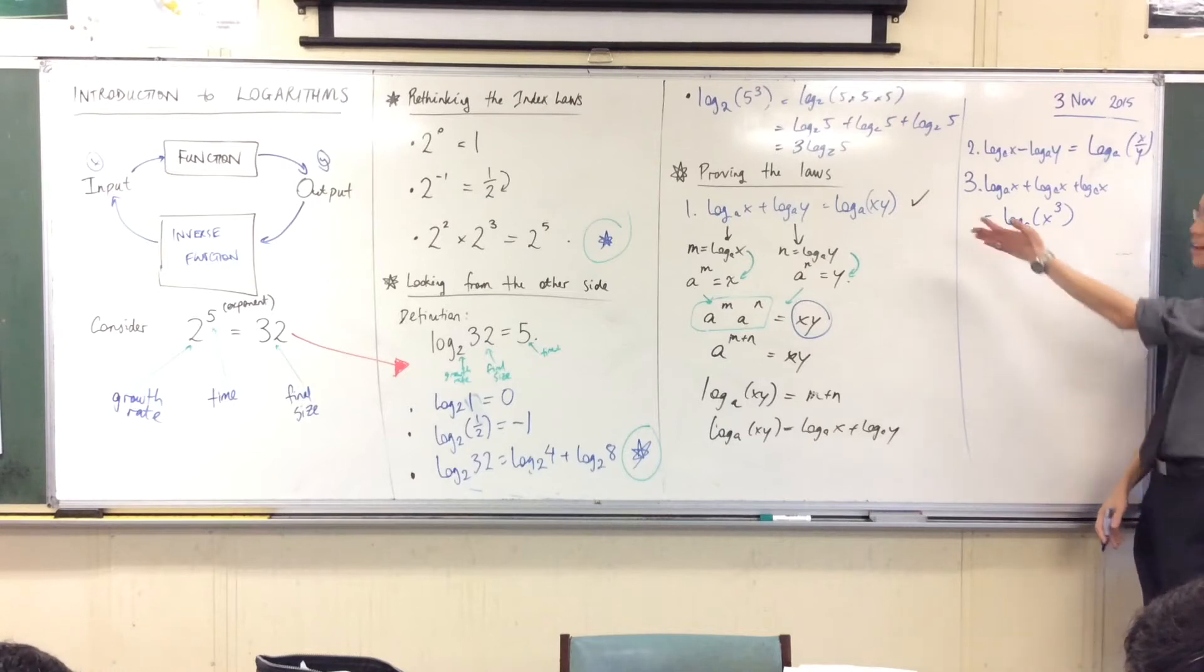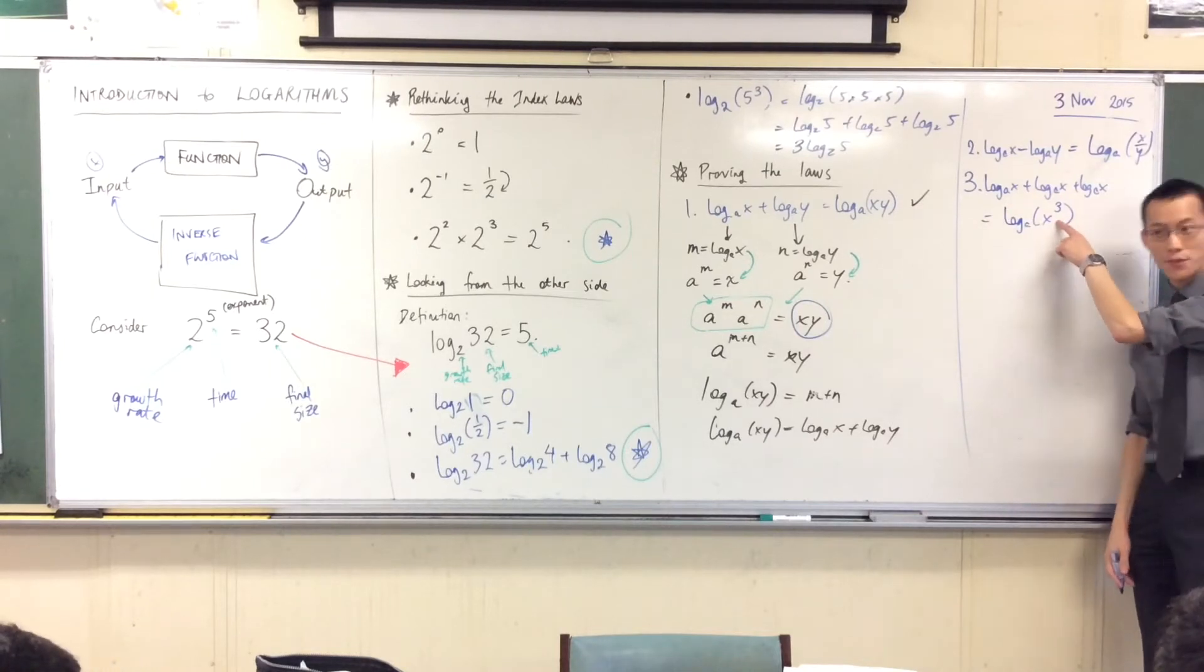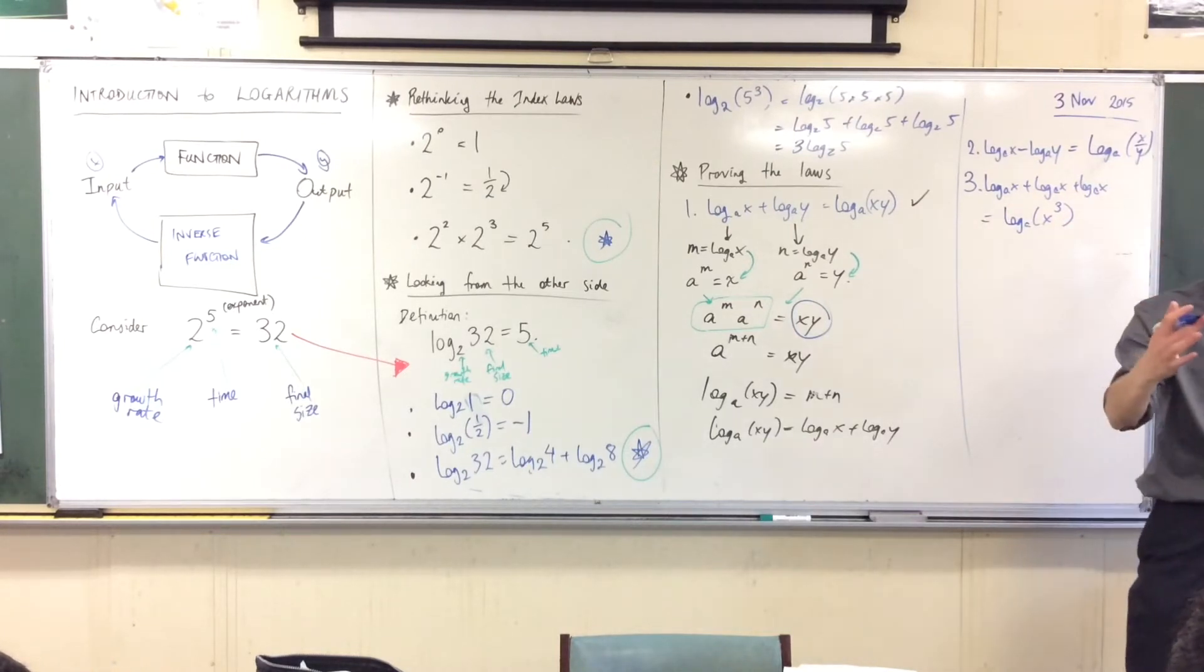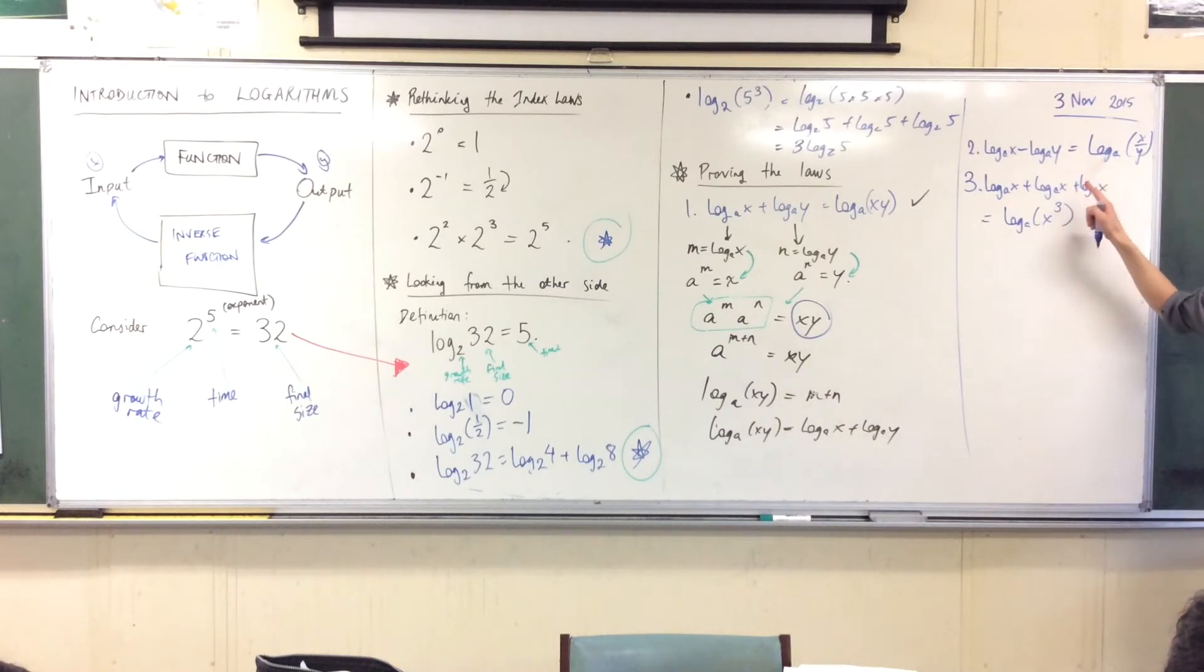Now this is just one version of it, right? If I added four times I'll get x to the four. If I added 50 times I'd have x to the 50, okay. So to state that more generally, if I add it n times...